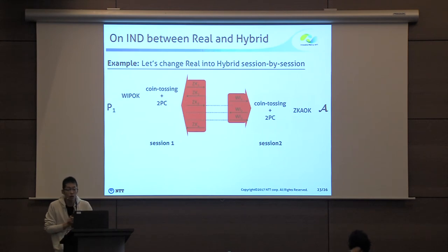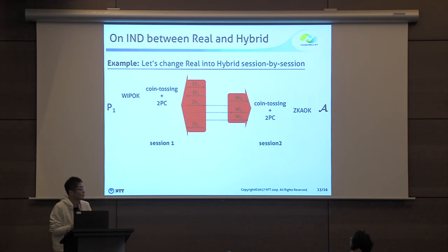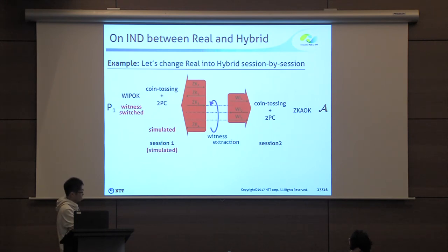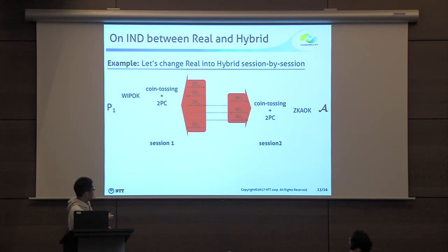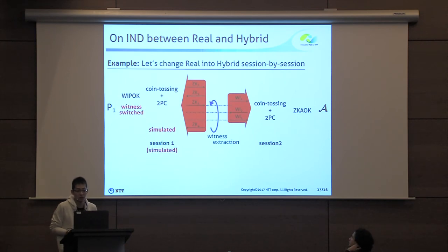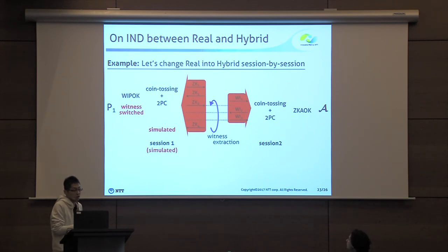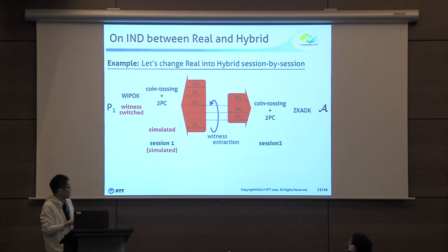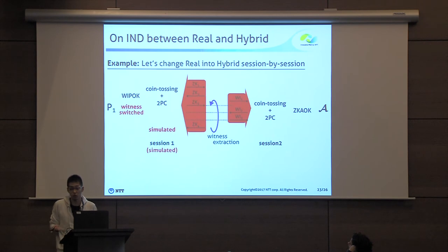To see the difficulty, let's consider what will happen if we change the real world into the hybrid in a session-by-session order. Consider the setting where the adversary is party two, and two sessions are executed in a specific concurrent order. When we go into the hybrid in a session-by-session order, we first simulate session one — in particular, we change the witness in the WI proof and simulate the two-party computation part while extracting the witness from the argument by rewinding its last two rounds. At this point, no problem occurs and we can still show the indistinguishability.